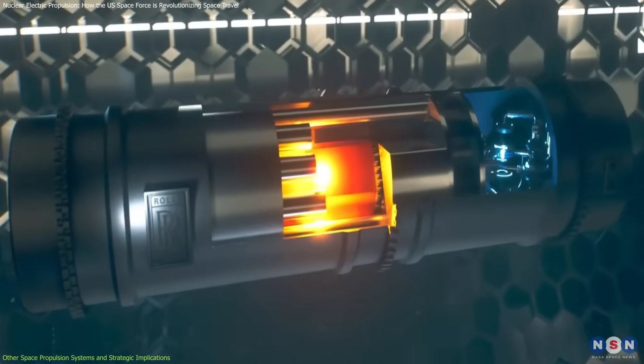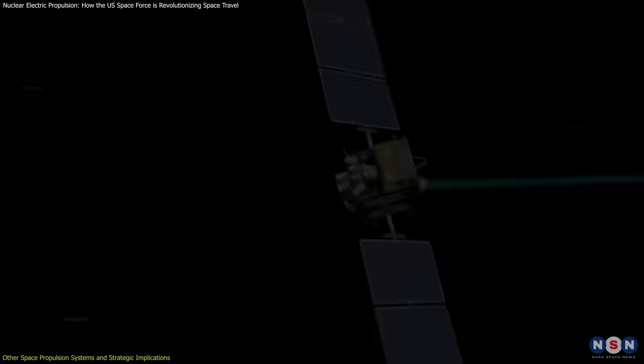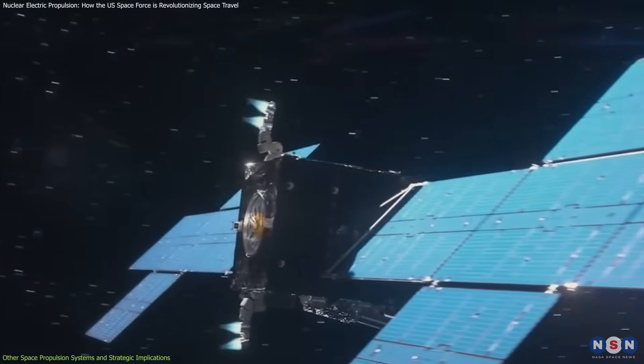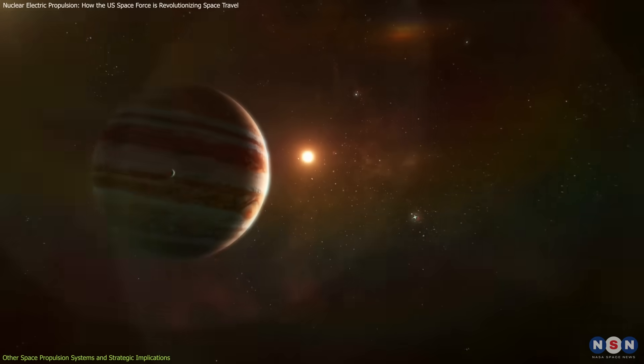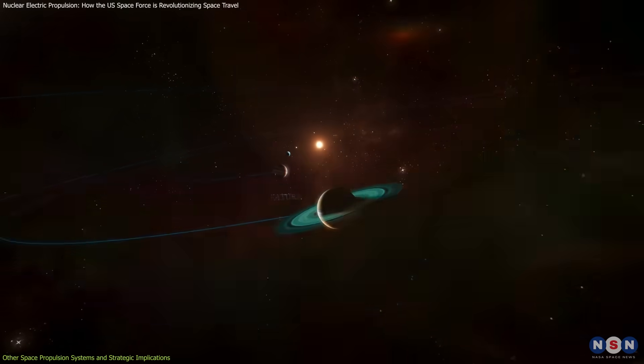In this context, the nuclear microreactor offers a way to power such thrusters beyond what solar panels could achieve, making electric propulsion viable for missions that extend far beyond the inner solar system.